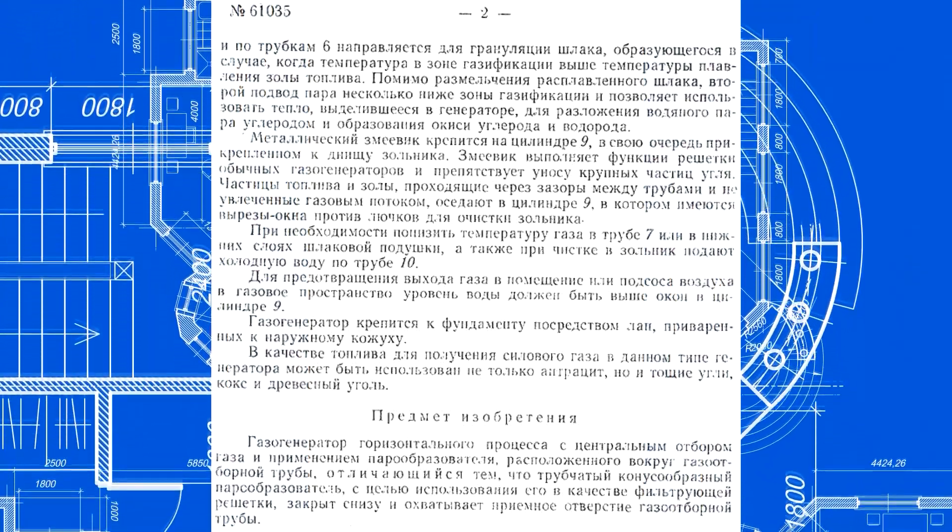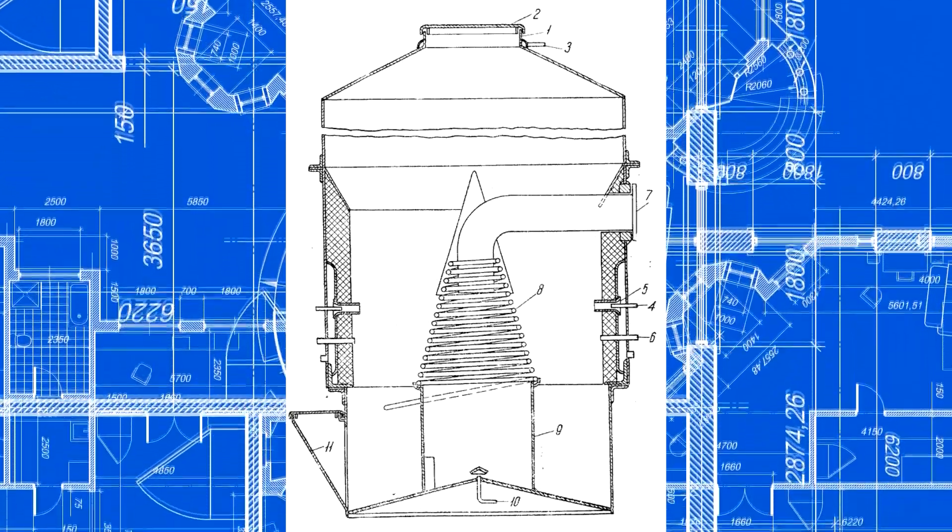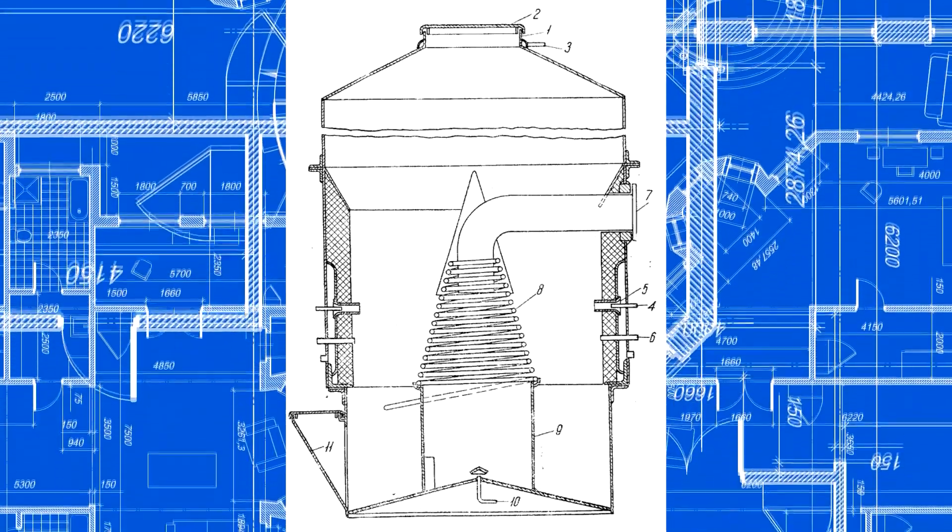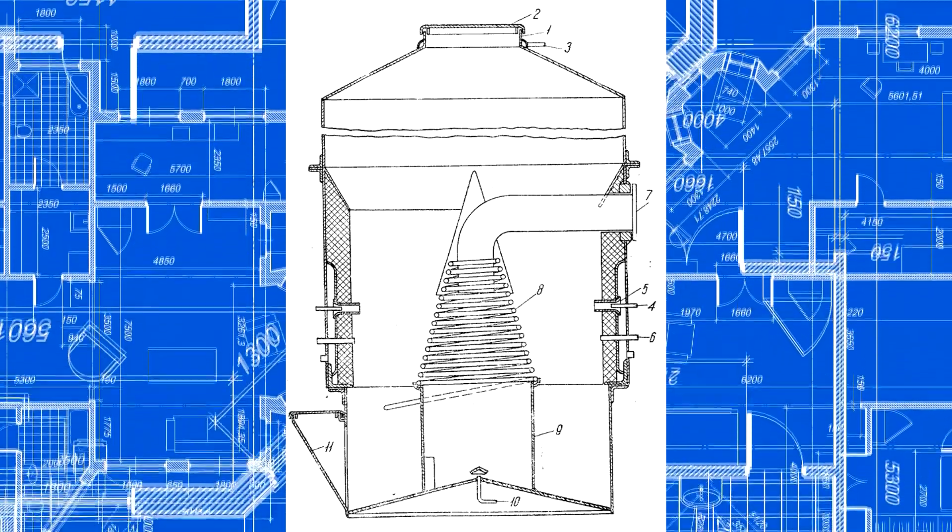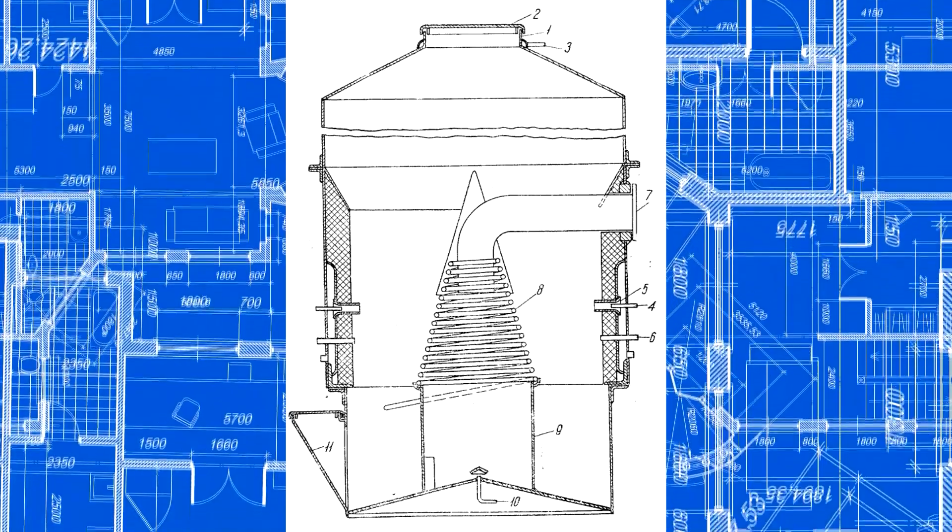Air was supplied to the transverse gasifier hopper from both sides through tuyers, marked with the number 5. There is a cone-shaped heating spiral 8 in the middle of the reactor to heat steam. This steam is supplied to the tuyers, marked with the number 4.